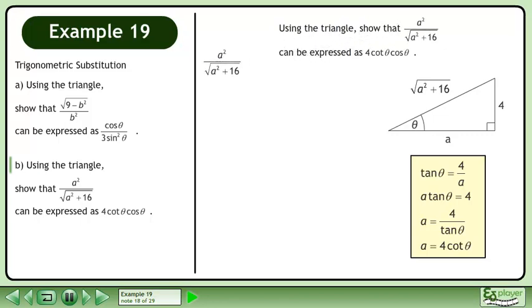We write a² over √. Plug in 4 cosθ for a. Square 4 cosθ in both the numerator and denominator. Factor out 16 in the denominator.